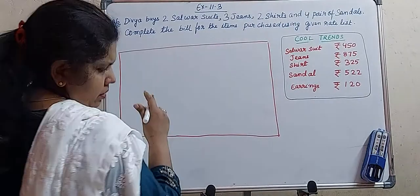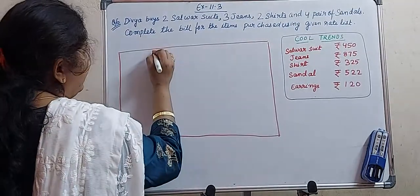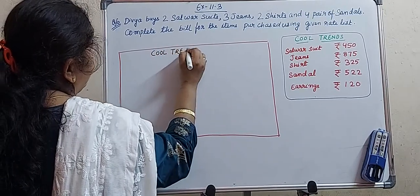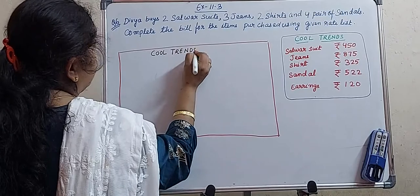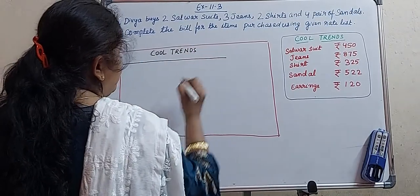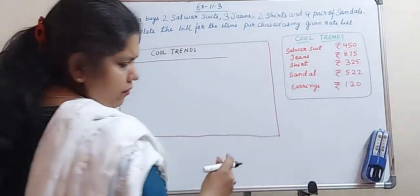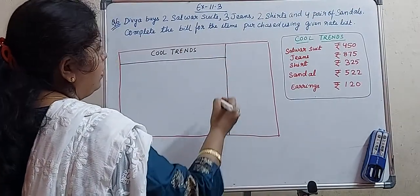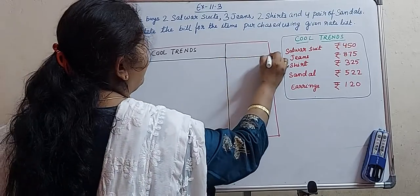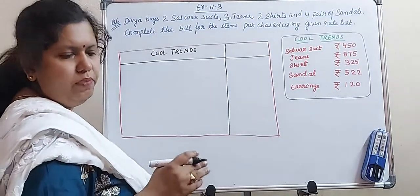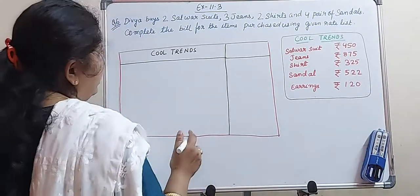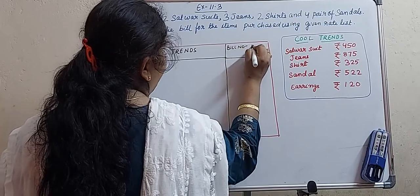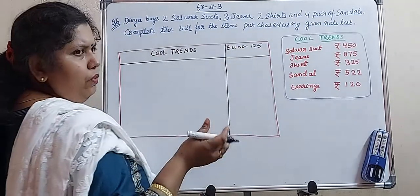Give the heading as 'Cool Trends', because the bill is prepared by this shop, Cool Trends. On the side of the heading, you have to mention the bill number and the date on which you purchased. It is already given in the question — the bill number is 125.